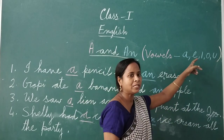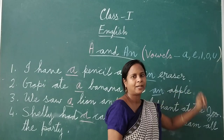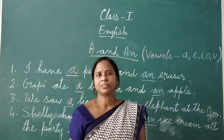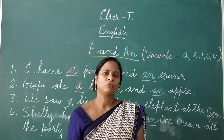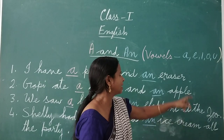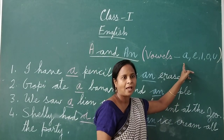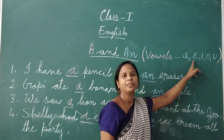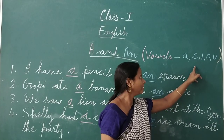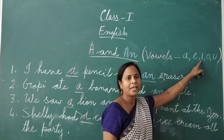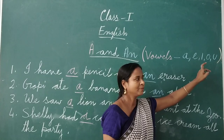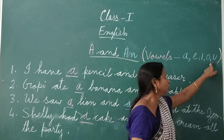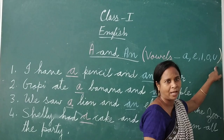With the vowel alphabets we can make 5 different words. That is A with apple, E with egg, I with ice cream, O with orange, U with umbrella.